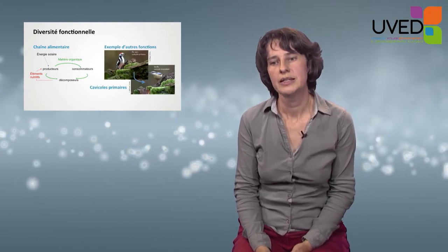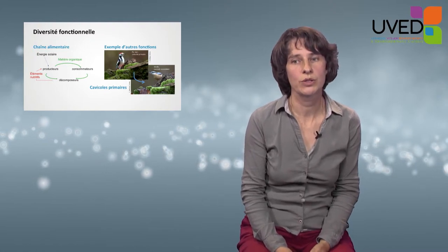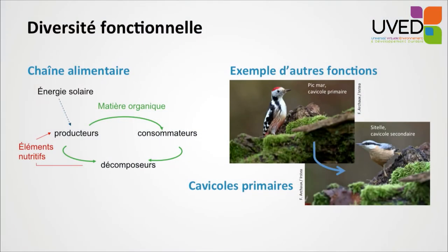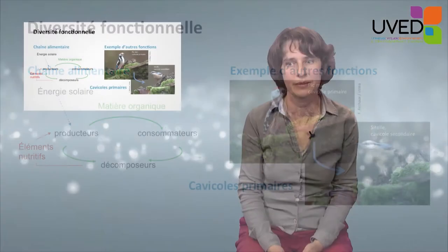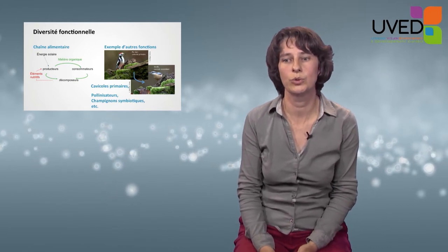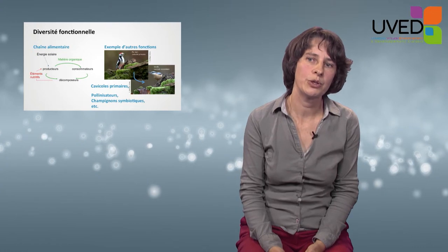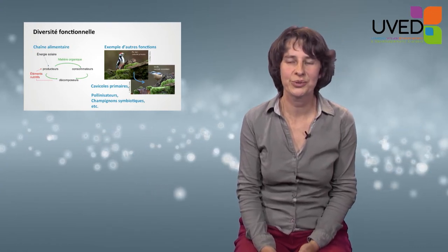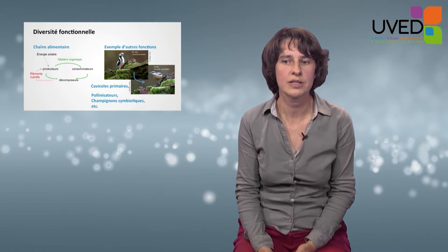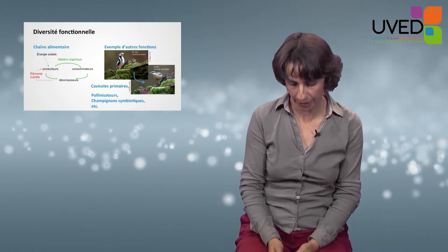Another example of function in the forest ecosystem is cavity nesting birds. Primary cavity nesting birds, like woodpeckers, dig their own cavity to nest in. Following that, secondary cavity nesting birds will use the same cavities — birds that need a cavity but cannot dig one. No primary cavity nesting birds means no secondary cavity nesting birds. Other important functions include pollination and the roles carried out by symbiotic fungi, which develop a win-win association with the roots of forest trees and can be vital for the growth of the forest ecosystem.